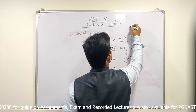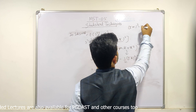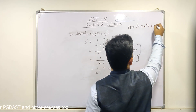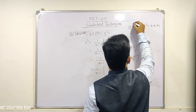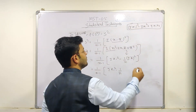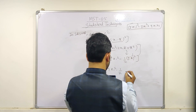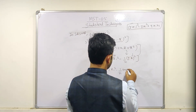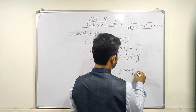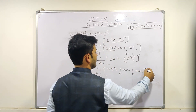Now, (Σxi)² — that is xi whole square — expands as Σxi² + Σxi·xj. So we substitute this expansion back. This gives us: Σxi² − (1/n)·Σxi·xj after combining terms.